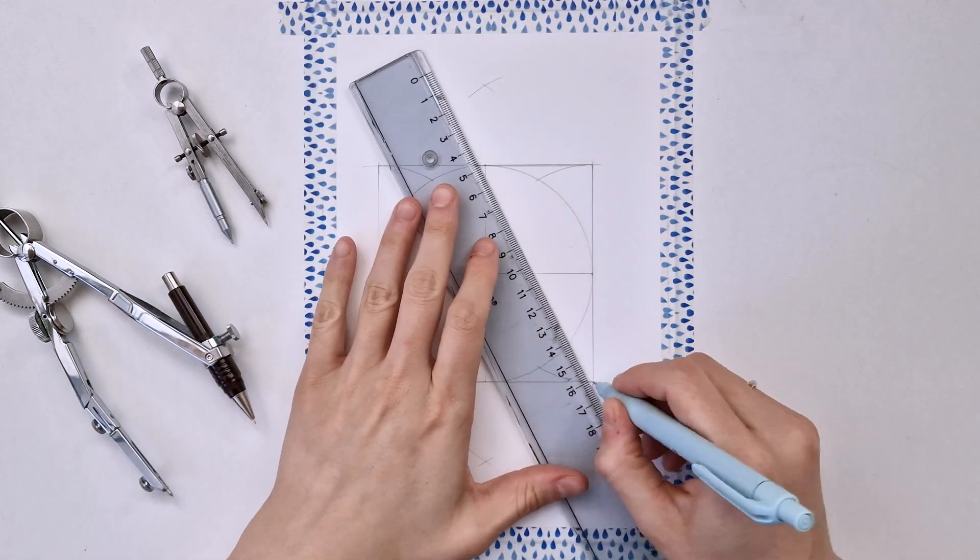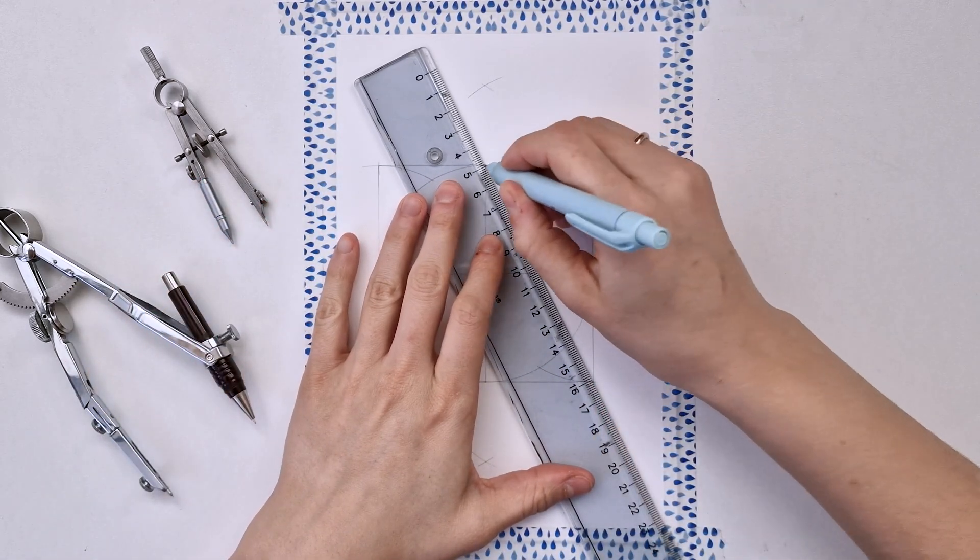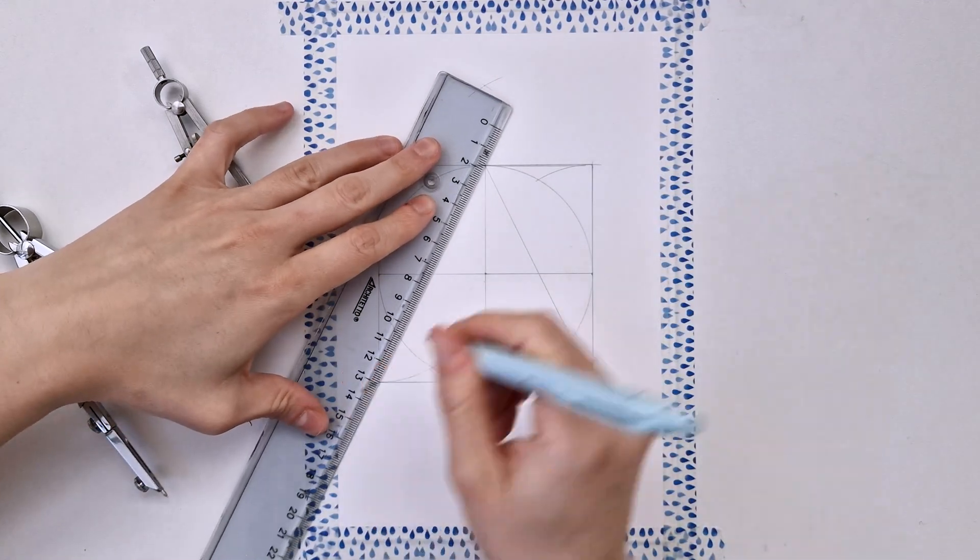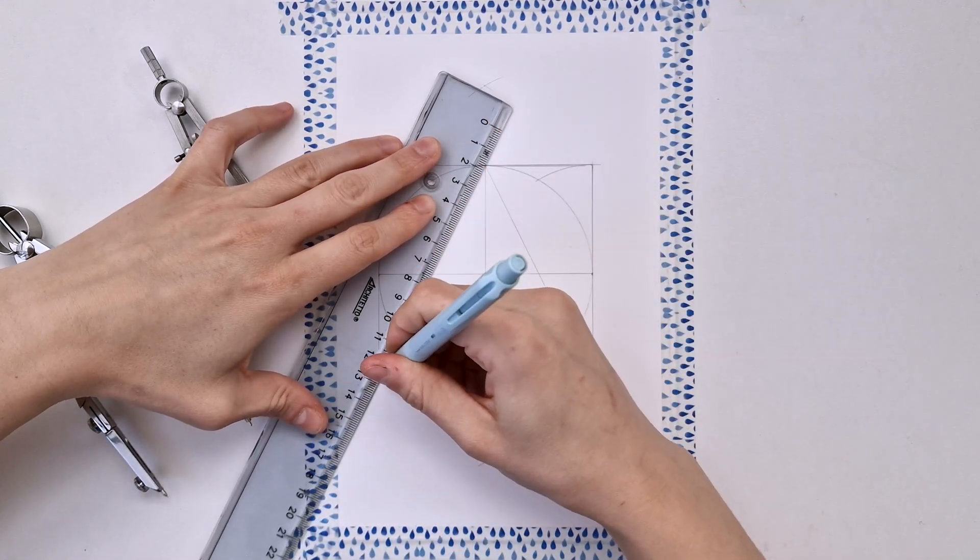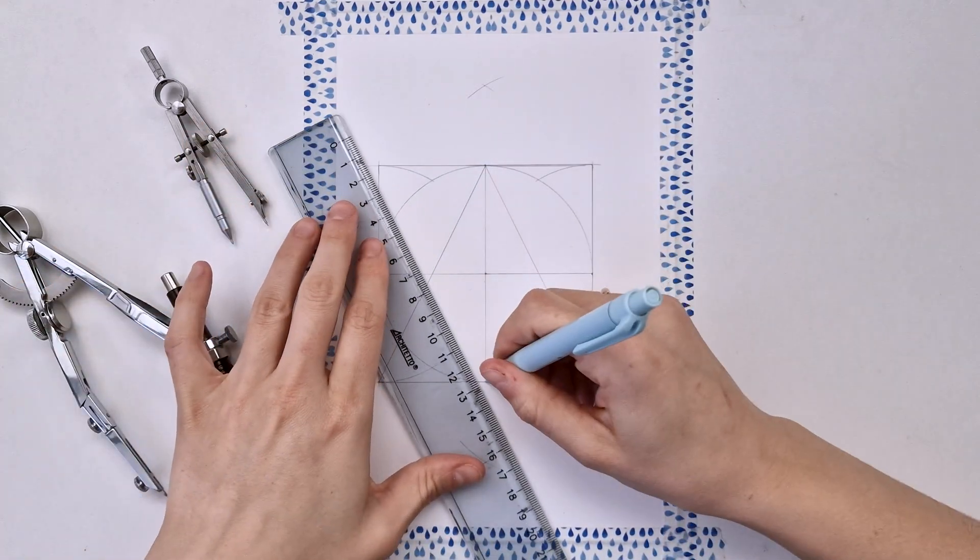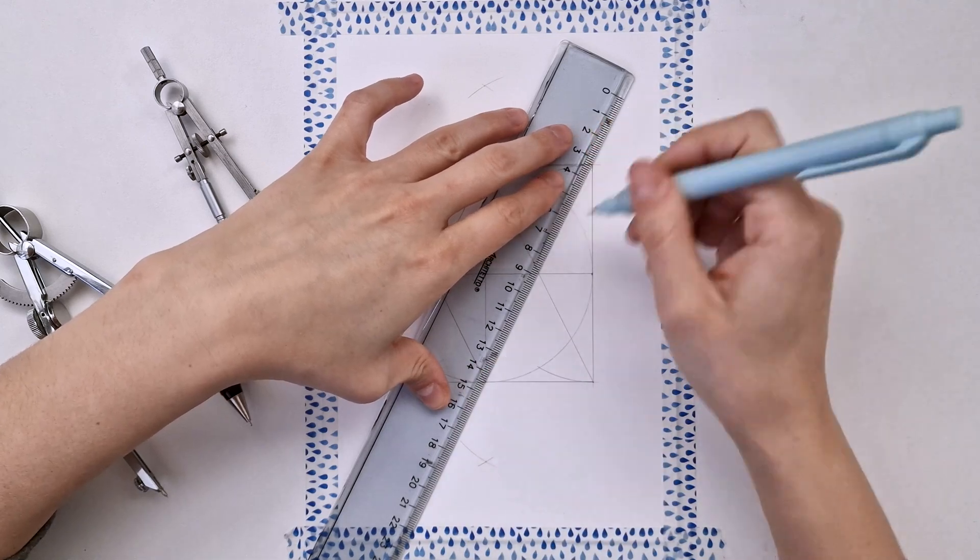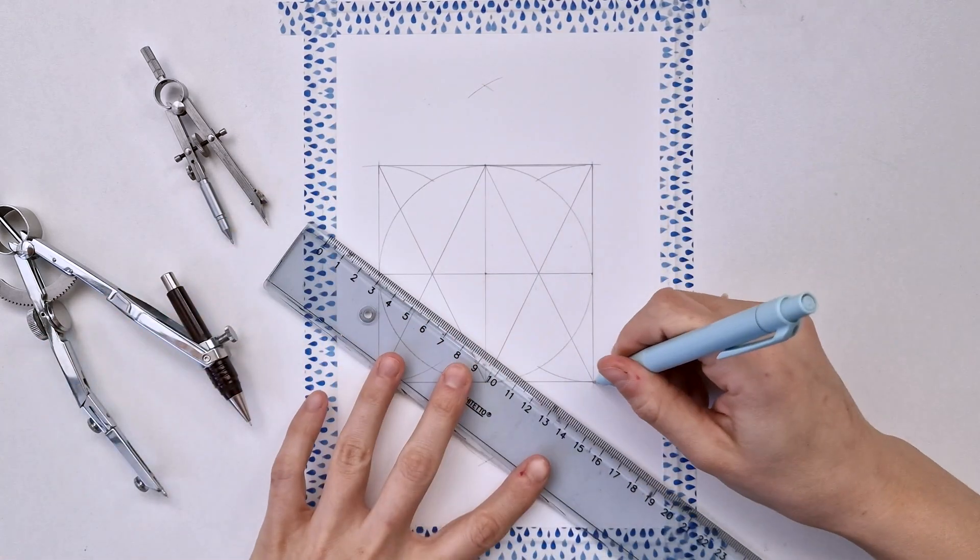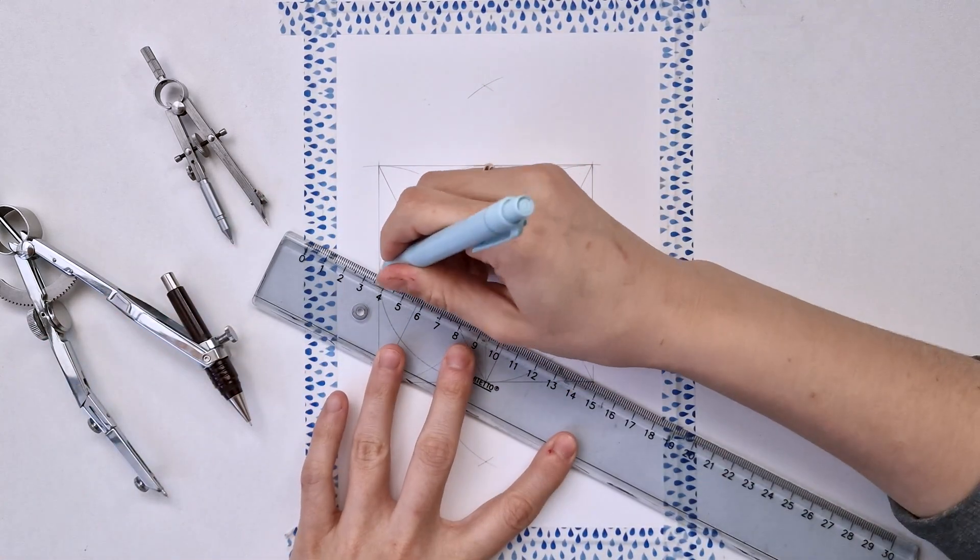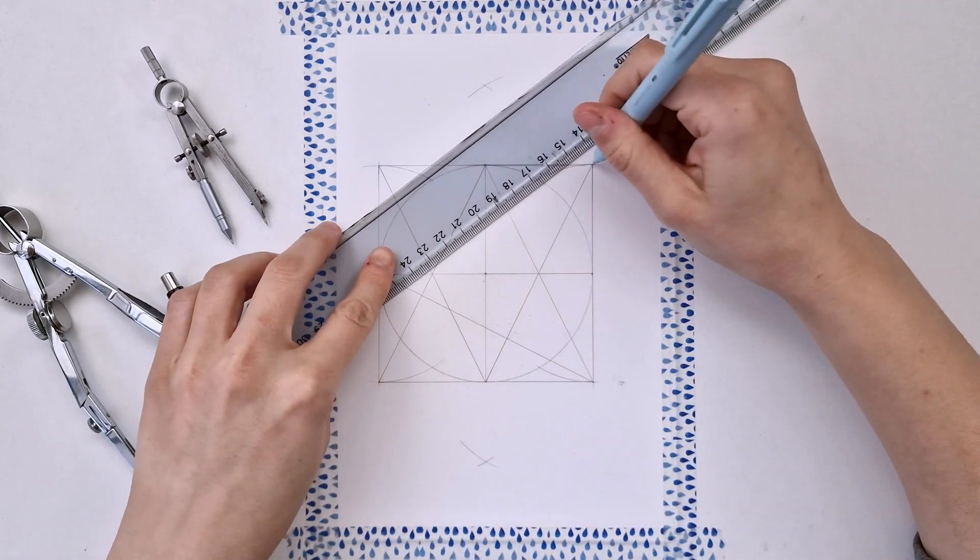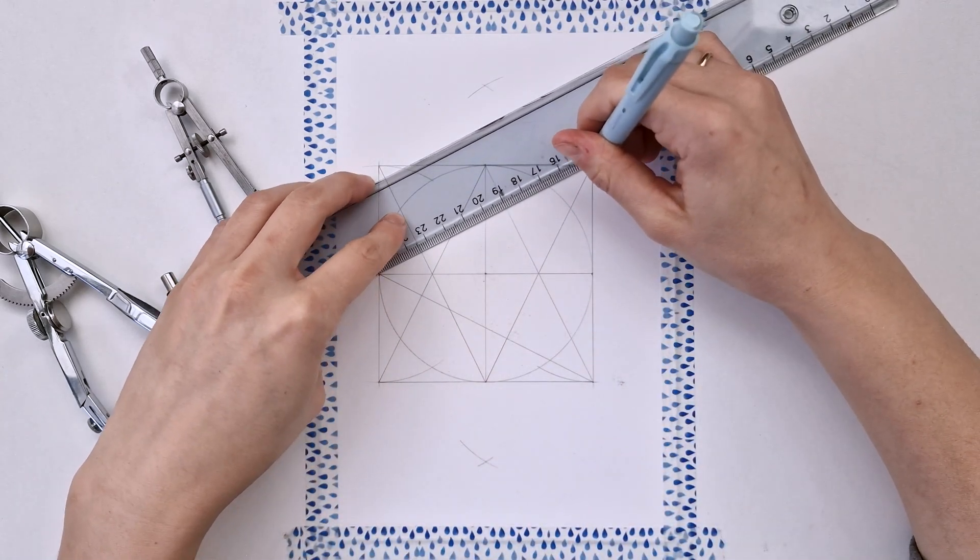Now let's align the ruler to these points on the square. I'm doing the V shape four times, connecting each corner of the square to each center point.